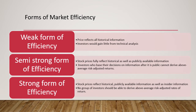The strong form of efficiency incorporates one additional data point: insider information. People outside a company typically do not have insider information, but this form of efficiency states that stock prices reflect historical, publicly available, and insider information. Since insider information is also already priced in, no group of investors should be able to derive above-average risk-adjusted returns from the market.